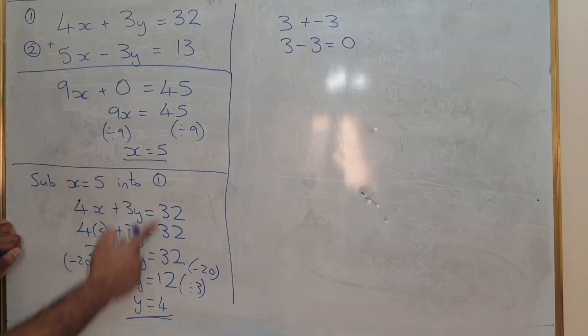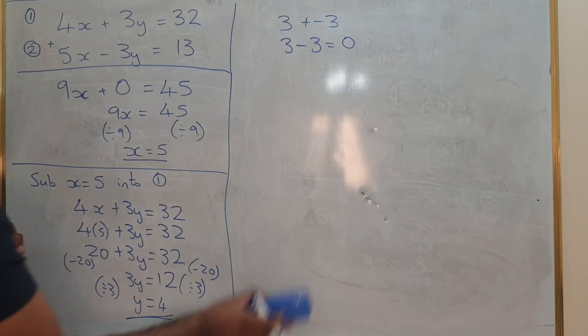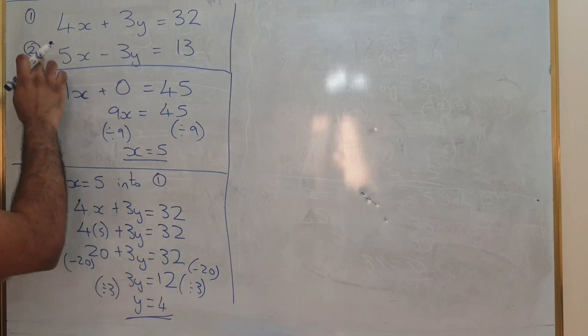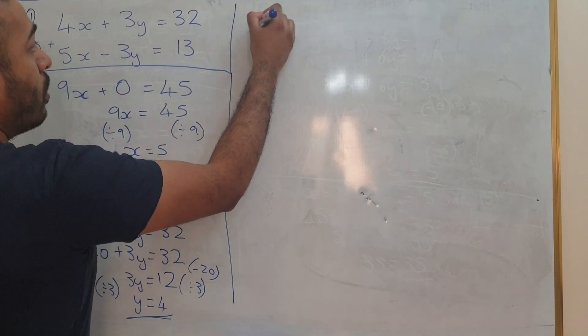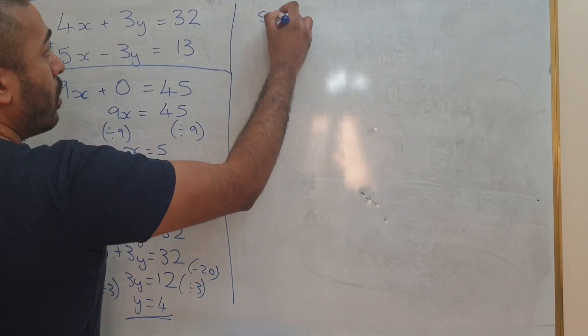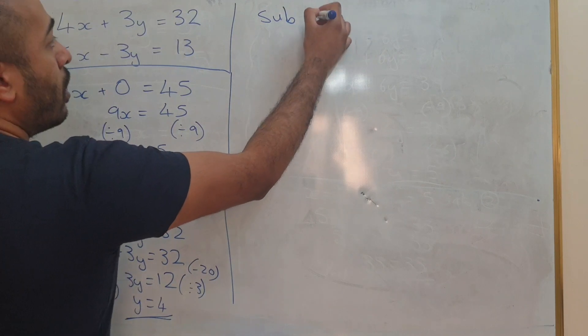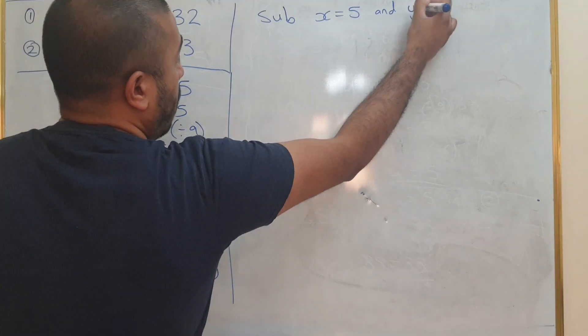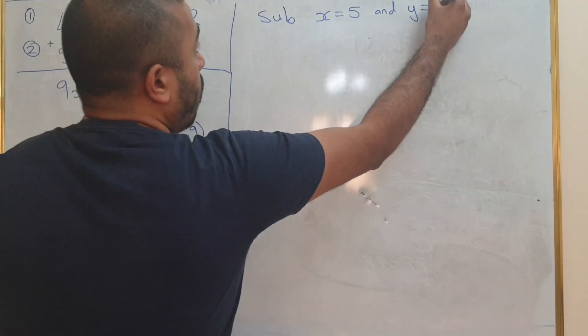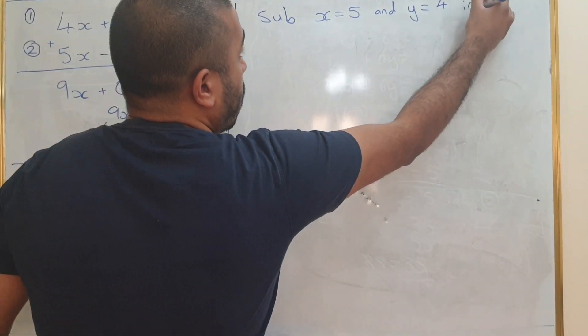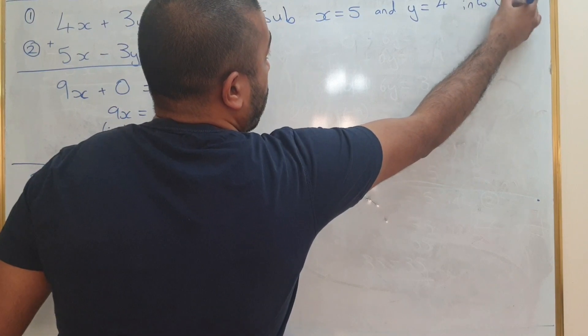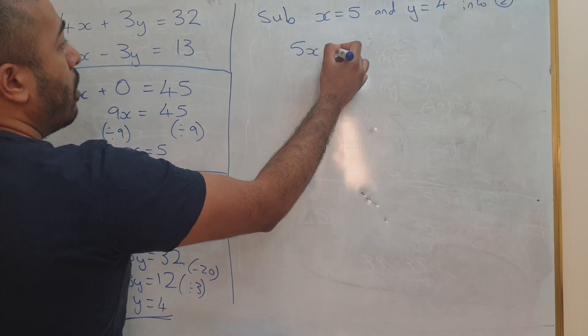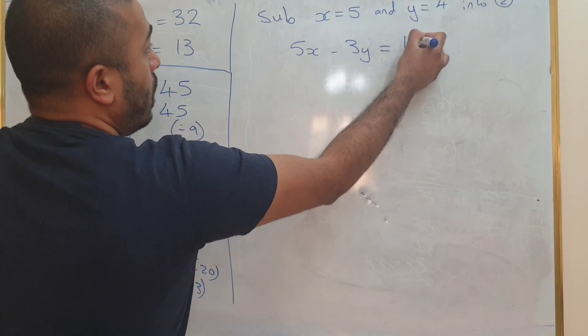And you get y equals 12 divided by 3, which is 4. So you've got an answer for x equals 5, y equals 4. The next thing to do is substitute both of these values into equation 2. So sub x equals 5 and y equals 4 into 2.